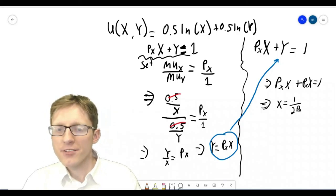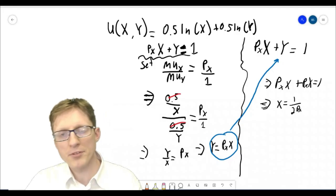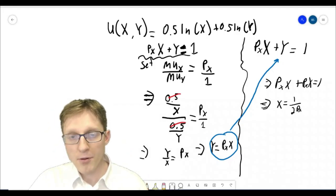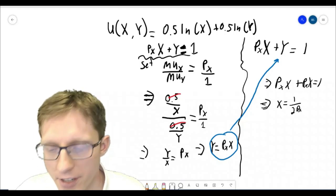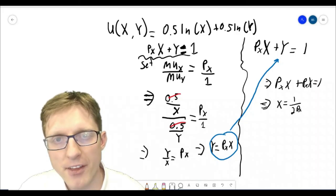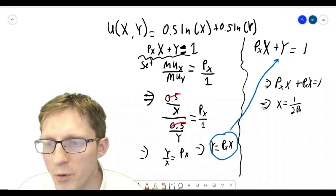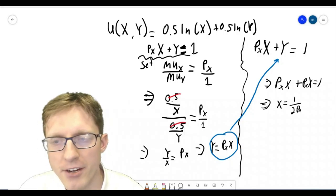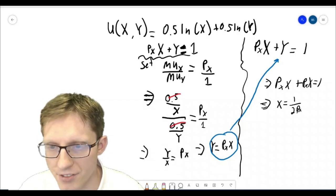Okay, so this gives, under the assumptions of a particular utility function that we assumed represent this consumer's preferences, and a certain price of good y and a certain income for this consumer, we've been able to derive the amount of good x that this person would consume as a function of the price of good x, which notice is in the denominator here. So if the price of good x goes up, this person is indeed going to buy less of it.